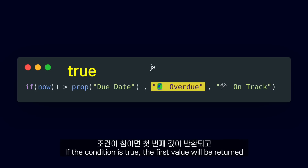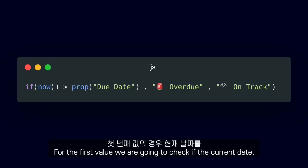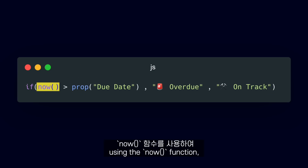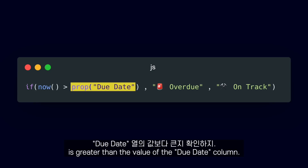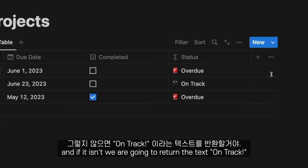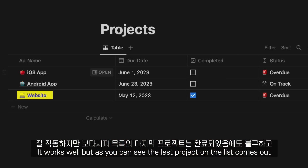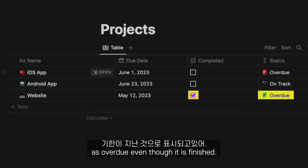The if function takes a condition and two values. If the condition is true, the first value will be returned, and if it isn't, the second one will be. For the first value, we are going to check if the current date using the now function is greater than the value of the due date column. If it is, we are going to return the text 'overdue', and if it isn't, we are going to return the text 'on track'. It works well, but as you can see, the last project on the list comes out as overdue, even though it is finished.